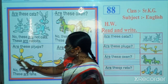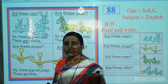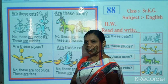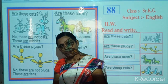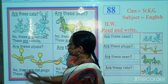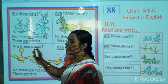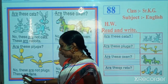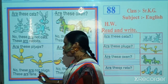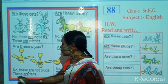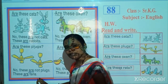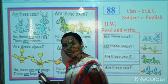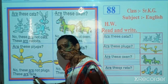Now look here, which picture is this? Correct. This is the picture of friends. This is the picture of hands. Now look at this question: Are these plugs? No, these are not plugs. These are friends. No, these are not plugs. These are friends.